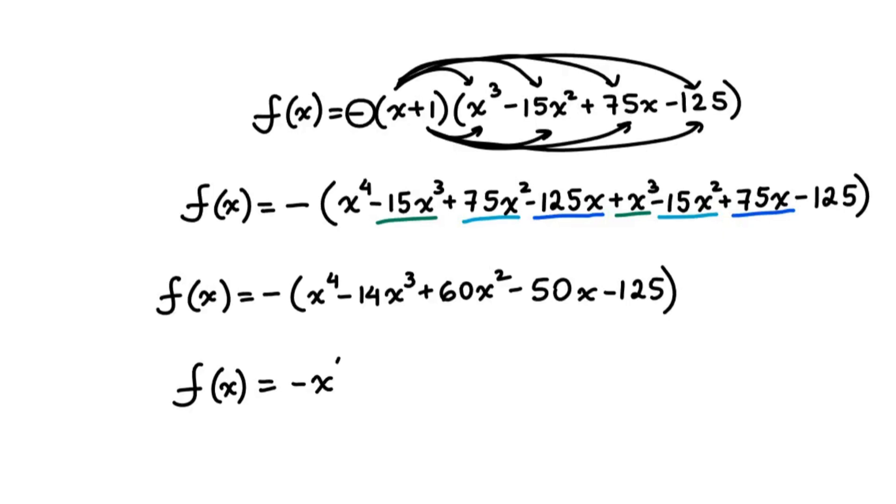Now we're going to distribute the negative 1. So every single term's sign changes to the opposite: plus 50x plus 125. And there we go. So we have a quartic function, right, with a negative leading coefficient. The y-intercept is determined by the constant in the expanded form, and it has the coordinates of 0, 125. Please like this video and visit intomath.org.